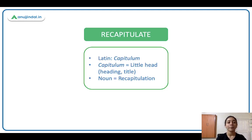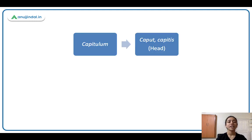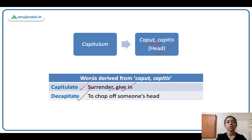Recapitulate comes from Latin 'capitulum,' which means little head, or heading/title. Jaisi headings hote hain — main heading, sub-heading. When you are recapitulating, you are just stating the headings, bas main main points. The noun is recapitulation. Capitulum comes from 'caput' or 'capitus,' meaning head. From this we get: capitulate — ka matlab hai surrender, give up, haarna; and decapitate — ka matlab hai to chop off someone's head, kisi ka sar kaatna.